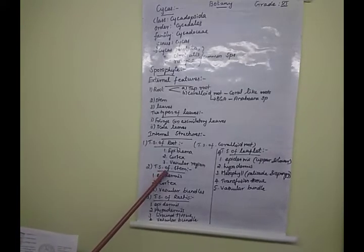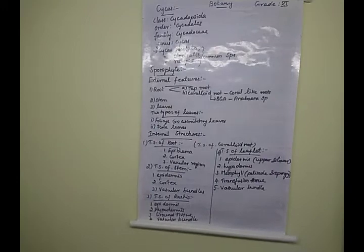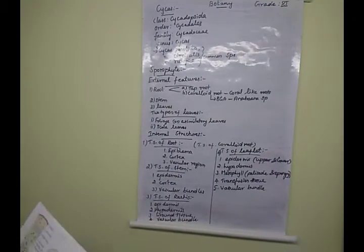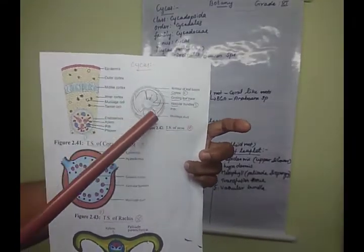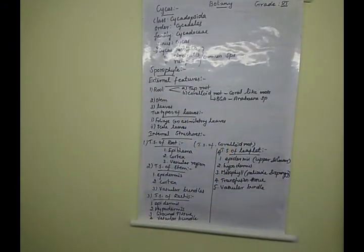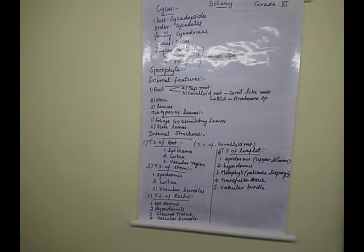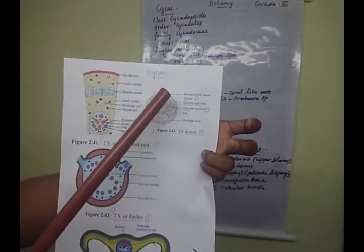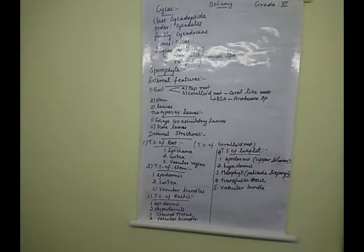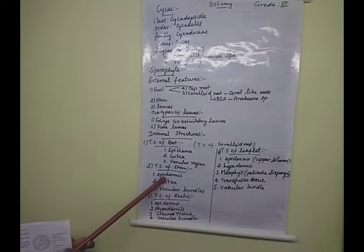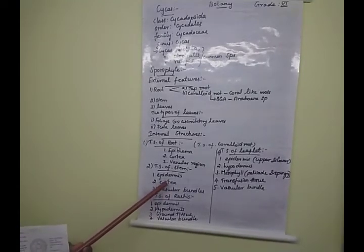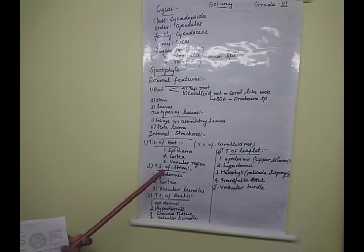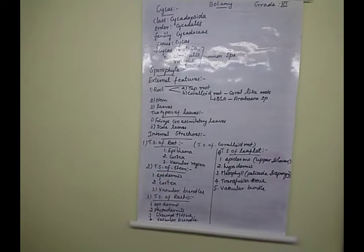Second, we are going to learn about the transverse section of the stem. What are the layers represented in the stem region? They are: epidermis, cortex, and vascular elements. In the young stem, there is an irregular type with persistent leaf bases present as the outermost armor.